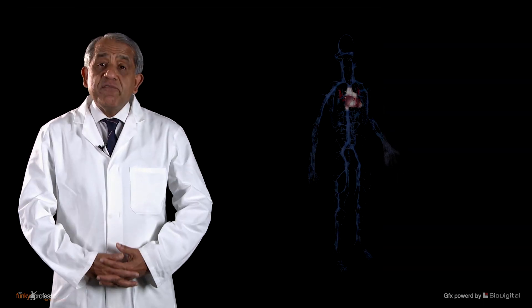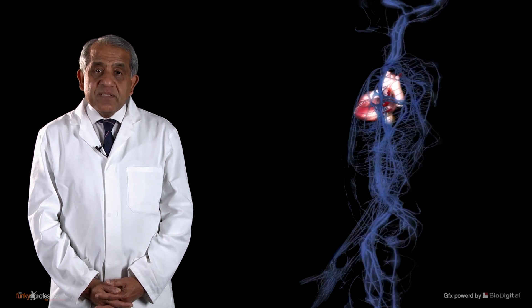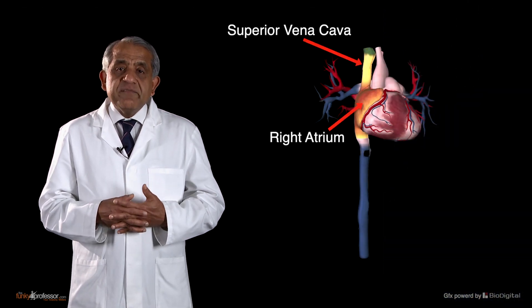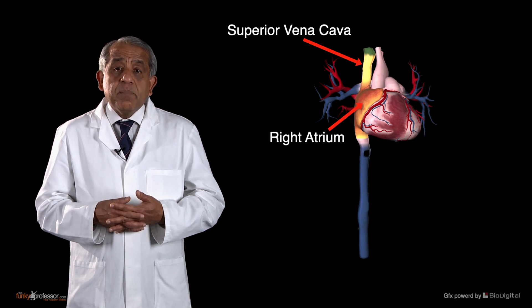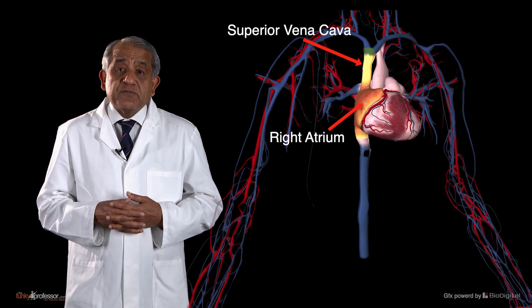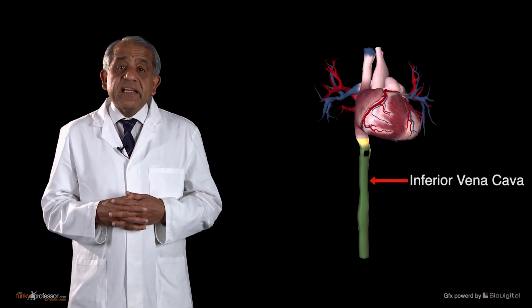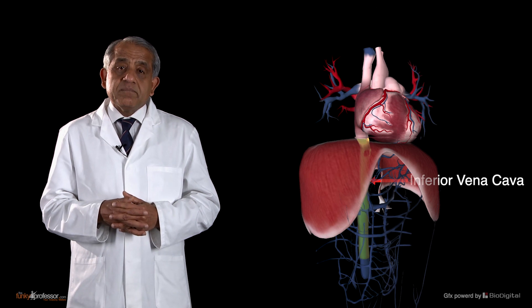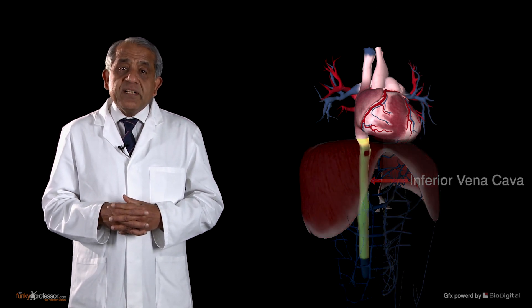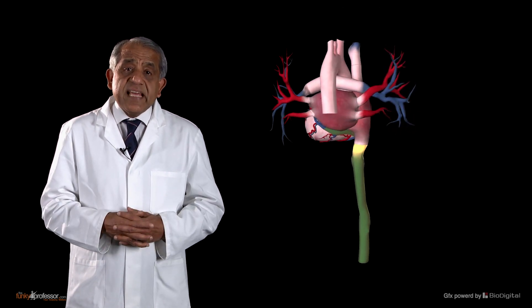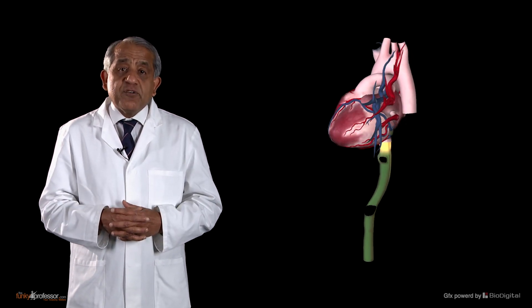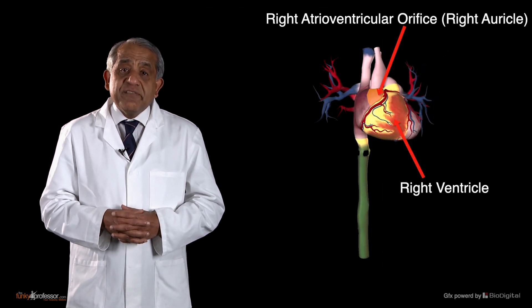Let's now take a look at the interior of the heart, examining each of the four chambers, starting with the right atrium. The right atrium receives venous blood from the entire body. The superior vena cava enters the roof of the right atrium, bringing blood from the head, neck, upper limbs, and upper trunk. The inferior vena cava enters the floor, bringing blood from the entire body below the level of the diaphragm. In addition, the venous drainage of the heart mainly enters through the coronary sinus. All this deoxygenated venous blood in the right atrium is pumped into the right ventricle through the right atrioventricular orifice.